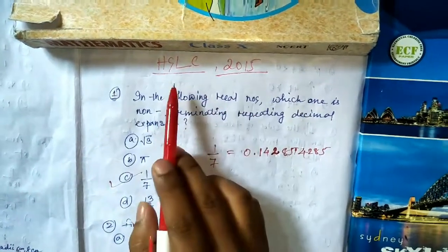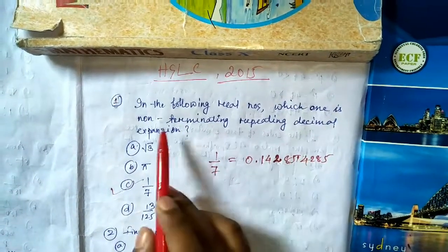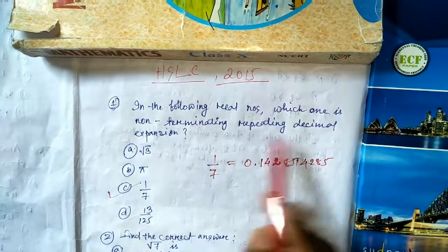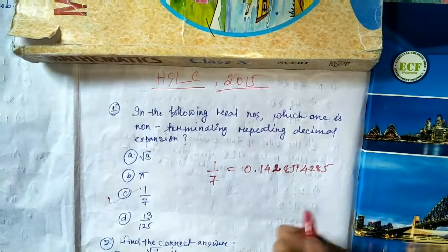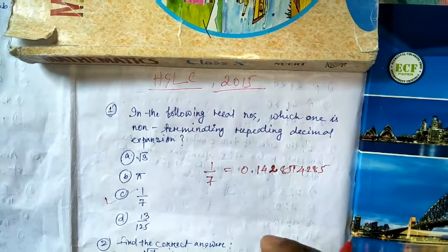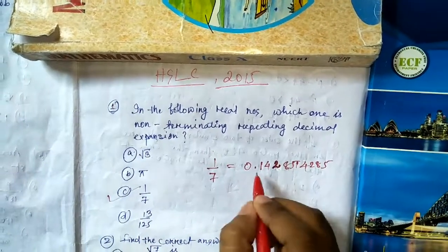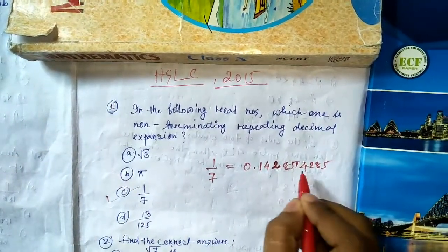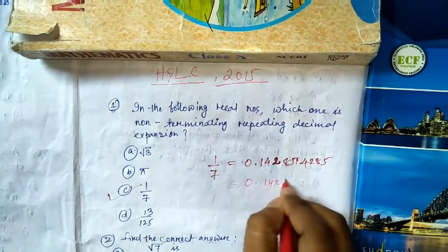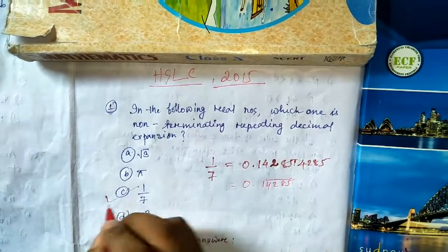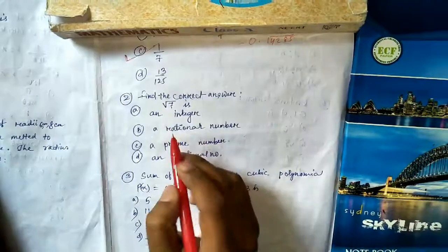Today we are going to learn the 2015 HSLC paper solution for mathematics. Question number one: which of the following real numbers is a non-terminating repeating decimal expansion? A non-terminating repeating decimal will not be completely divisible. When you divide 1 by 7, you get 0.142857142857... repeating. So the answer is 1 by 7.